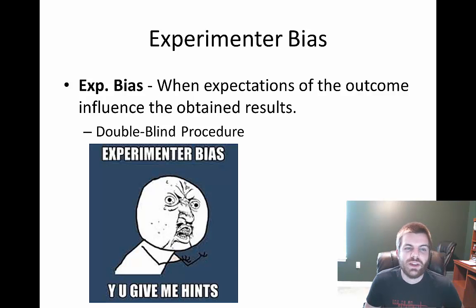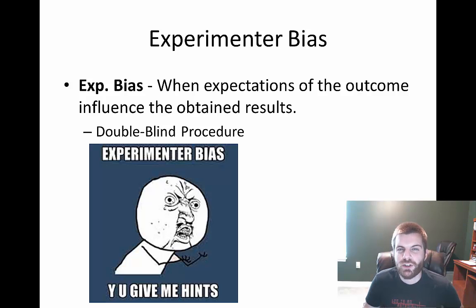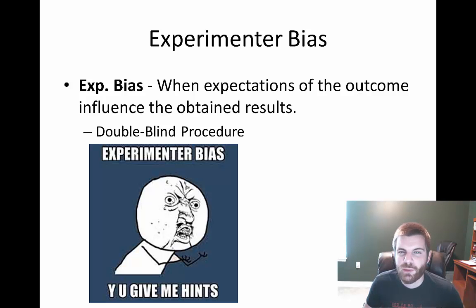Finally, experimenter bias occurs when your expectations of the outcome can influence your obtained results. One of the ways people combat this is to use the double blind procedure, where as the head researcher you don't know who belongs to what group, and neither do the participants. This allows for elimination of experimenter bias. This concludes lesson number four — thanks for watching and hope to see you back for lesson number five.